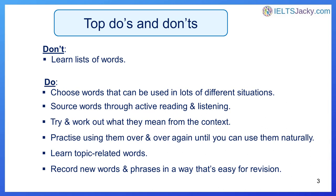We'll start with the top dos and don'ts of learning vocabulary for the IELTS exam. The top don't has to be: don't learn lists of words. With that clear, let's focus on what you should do. First, choose words that could be used in lots of different situations. Second, source words and phrases through active reading and listening. Third, try and work out what they mean from the context. Fourth, practice using them over and over again until you can use them naturally. Fifth, learn topic related vocabulary. And sixth, record new words and phrases in a way that's easy for revision.